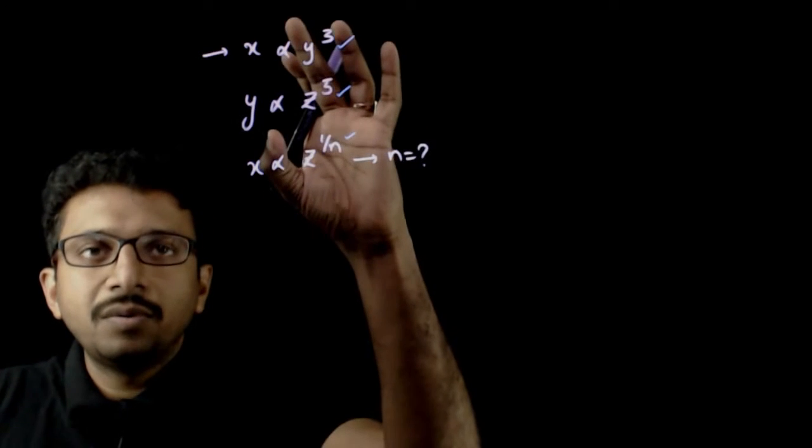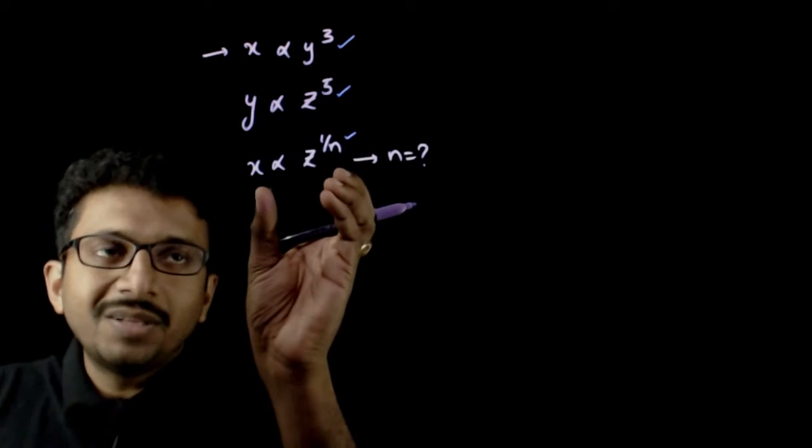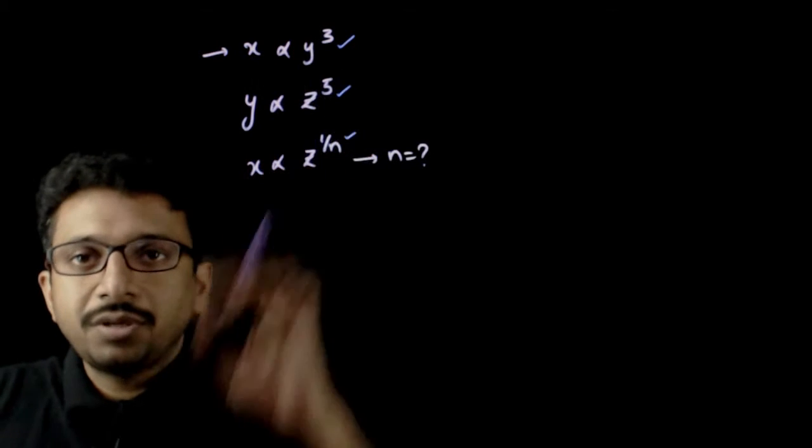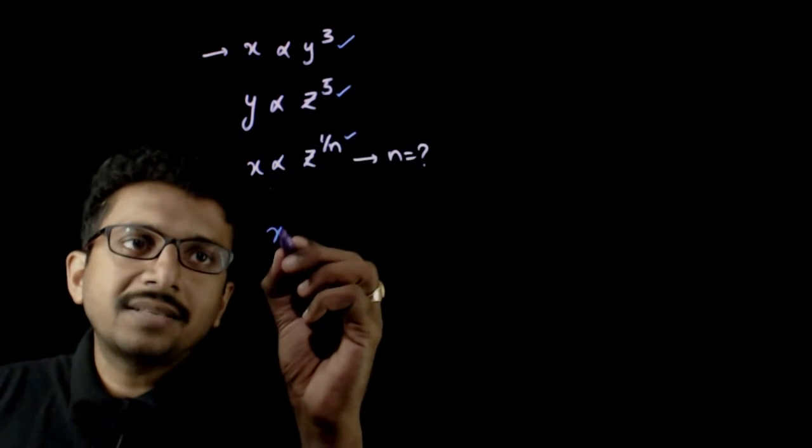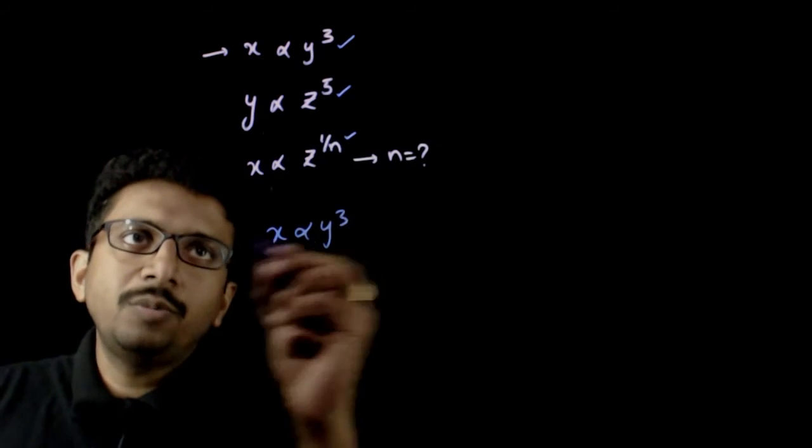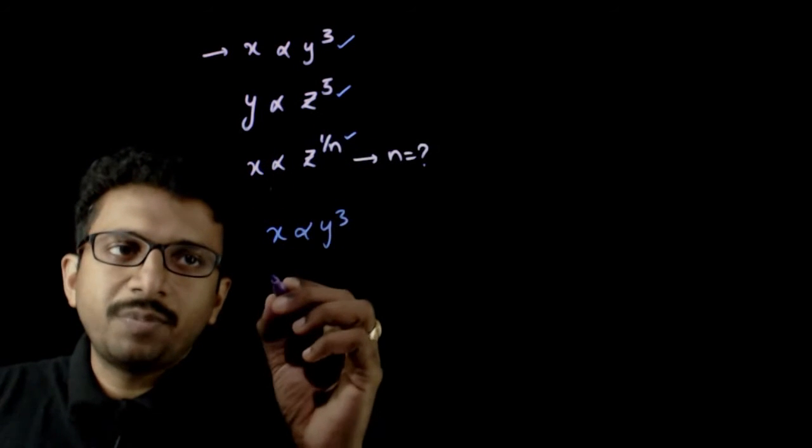What can you say about the dependence of x and z based on the given information? x is proportional to y cube, y is proportional to z power 5.